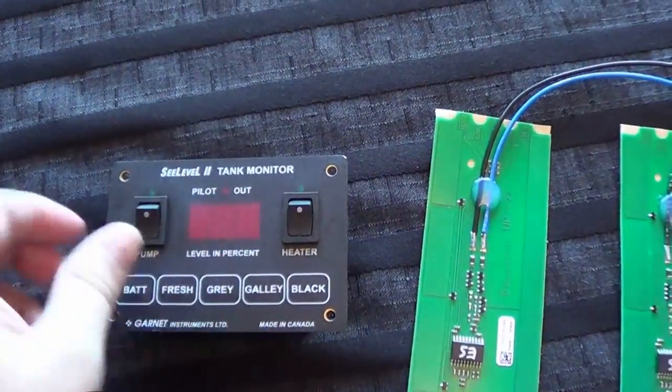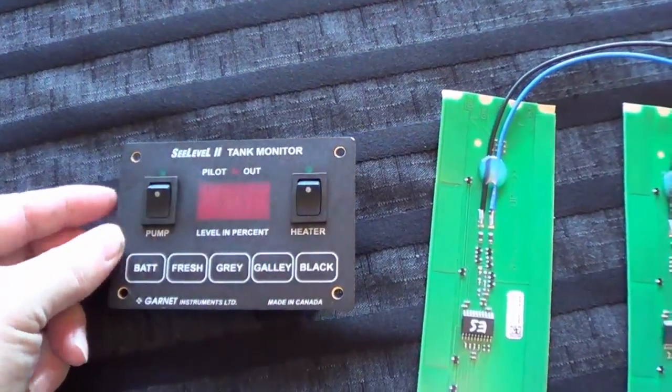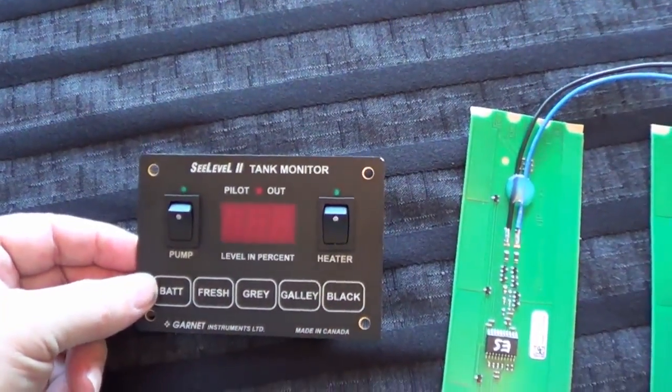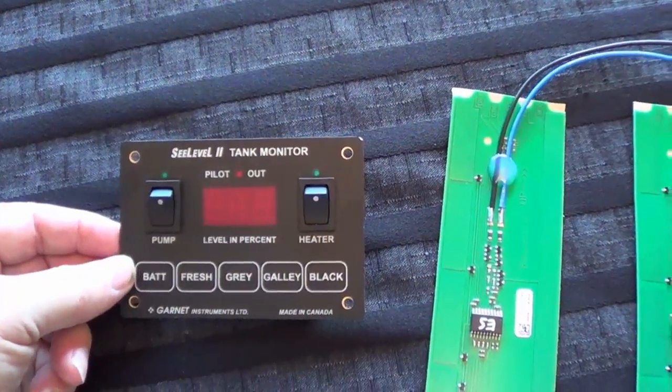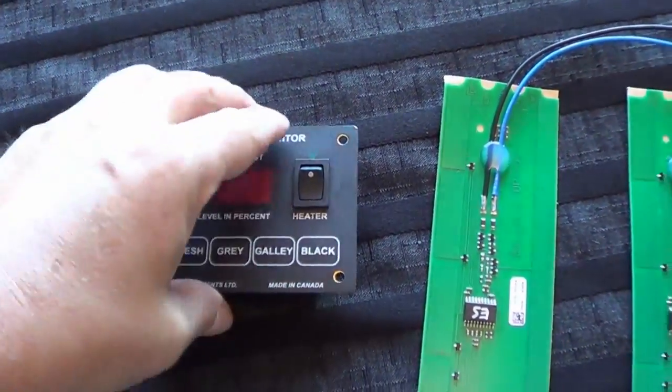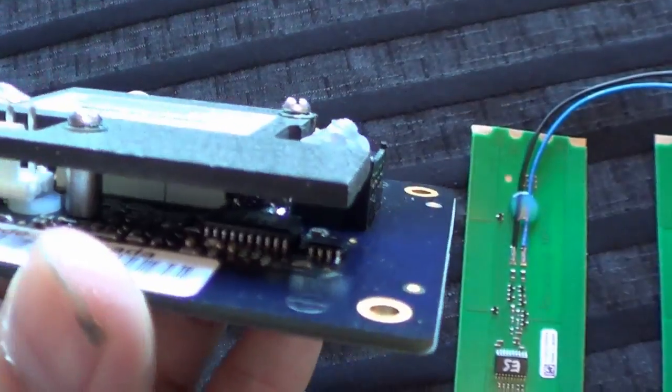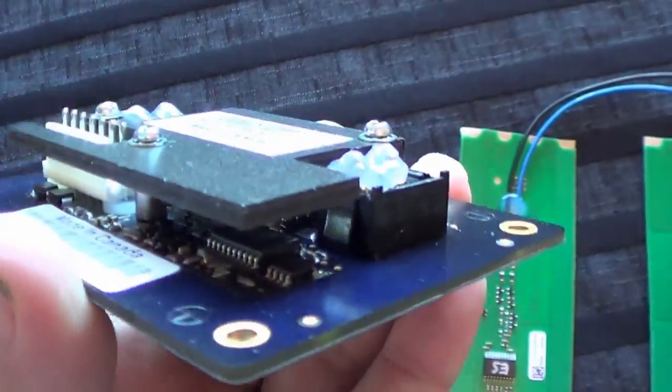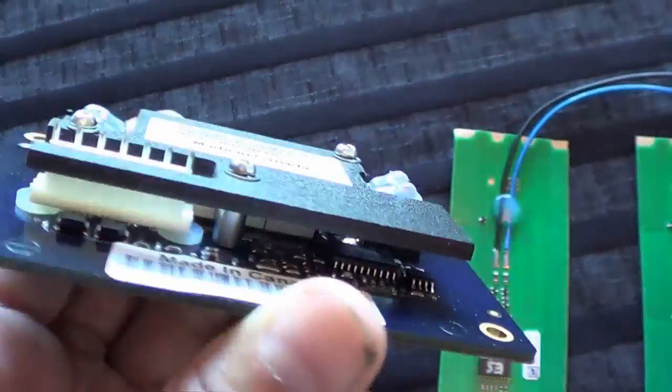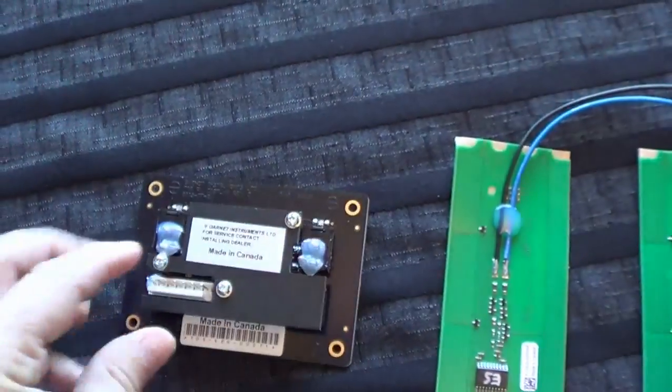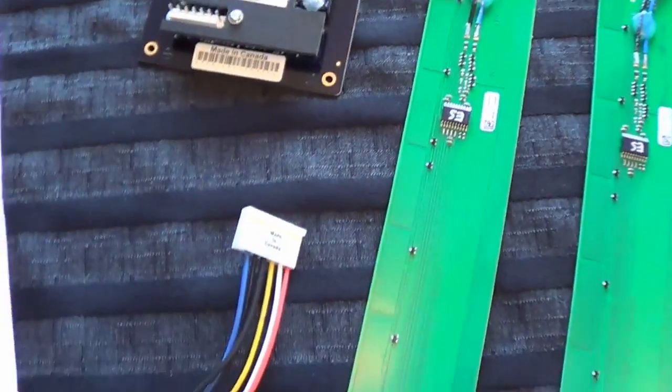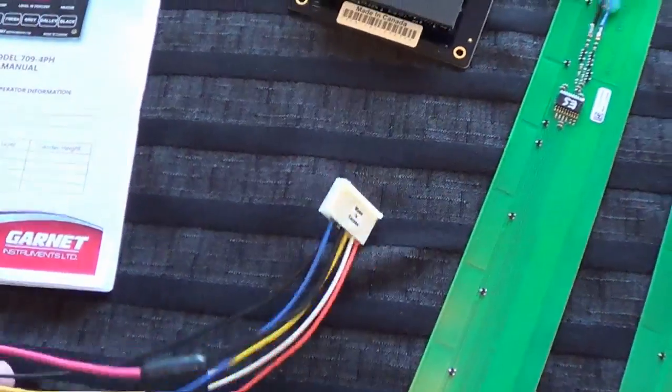And then there's the display panel, looks like it's three digits and it'll display the voltages and the percentage full of the tanks. There we go, there's a little bit of circuitry in there with some chips. And then on the back here is your Molex connector to plug into your wiring harness.